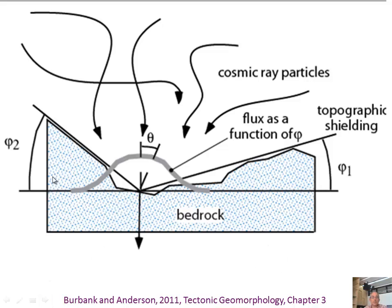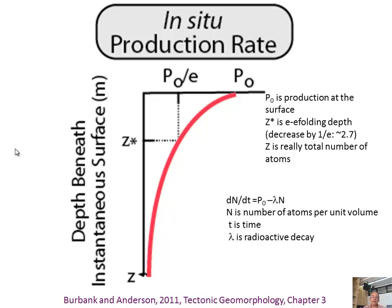Sometimes we have to deal with what we call topographic shielding. If you're in a deep canyon, you obviously have less access to the sky than if you're on top of a mountain. So when you collect samples in a canyon, you may have to measure the angle to the skyline in multiple directions around you, so we can correct for this topographic shielding.